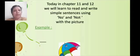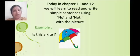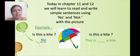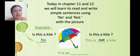I will give you one example. See the picture. Can you see the picture? I will ask you a simple question: Is this a kite? I want the answer in one word. You will tell 'no'. Now I will ask again: Is this a kite? We will write the full sentence. No becomes 'not' — this is not a kite.